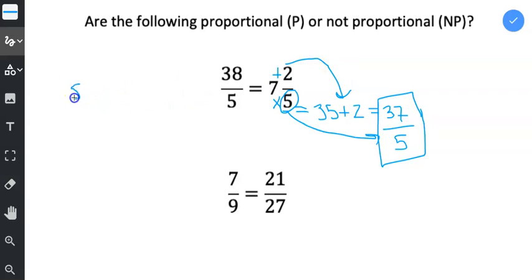So what I'm going to do is I'm going to write 38 fifths. And then when you have an equal sign and a cross through it, that means not equal. So 38 fifths is not equal to 37 fifths. That's the work that I was showing. And then I put NP, which means it's not proportional, because if it was proportional, the two unit rates would be equal.